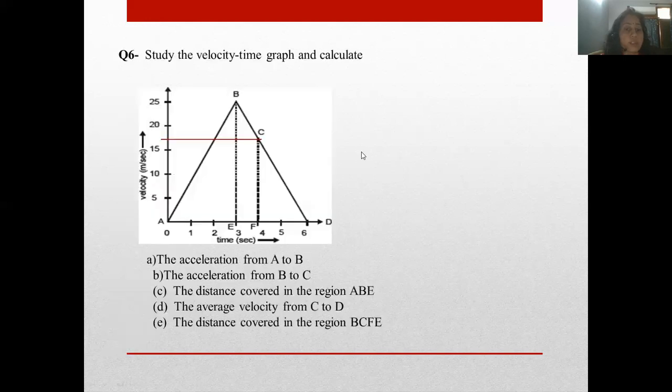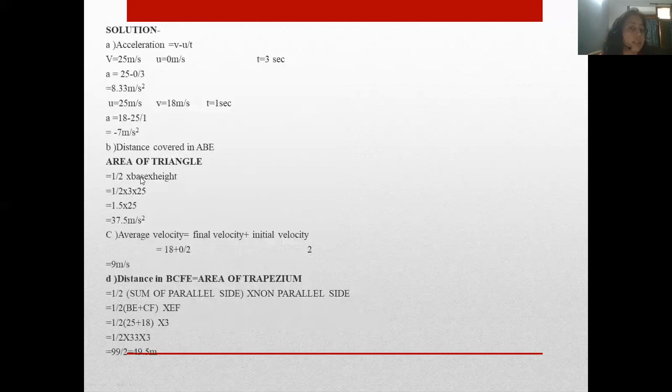Now, distance covered in the region ABE. Again distance covered in the region ABE. What is the region of ABE? Triangle. So how to find distance? Area of triangle ABE. Then what is area? Half base into height. That is half, base is AE, height is BE. The area of triangle is half base into height: half × 3 × 25, that is that. This answer is in meters, not meter per second. That is in meters. In PDF everything is corrected in this way.